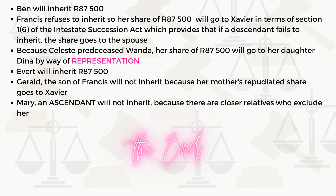Because Celeste predeceased Wanda, her share of 87,500 rand goes to her daughter Dina by way of representation. It is important to highlight that Dina inherits the share her mother was supposed to receive — 87,500 rand — by way of representation.